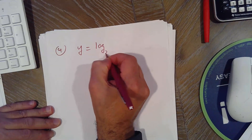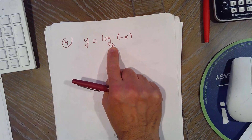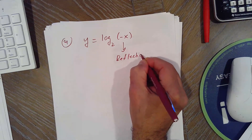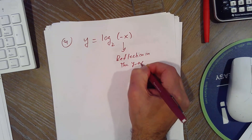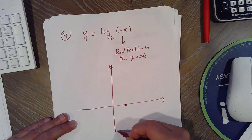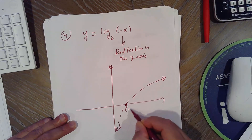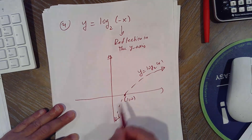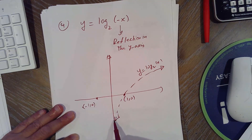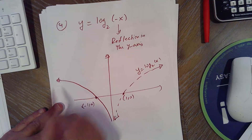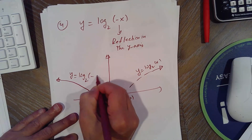Example 4: y equals log base 2 of (−x). It's the increasing graph (base > 1) but with a reflection in the y-axis, since f(−x) means reflection across the y-axis. The x-intercept (1, 0) becomes (−1, 0). This is y equals log base 2 of (−x), defined for negative x values.